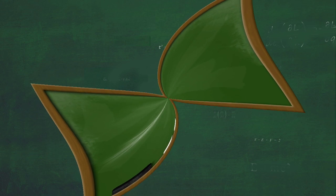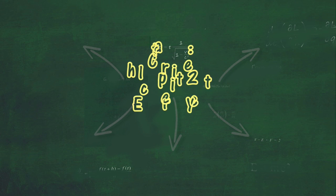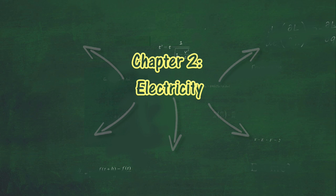In this video, we will summarize the expected learning outcomes of Chapter 2, Electricity, in the form of a Concept Map. In this chapter, we will learn and understand more about electricity and how it works. There are five main sections in this chapter.